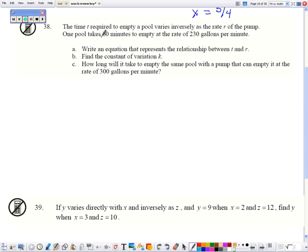So reading our word problem, the time varies inversely with the rate of the pump. It takes 60 minutes, that's the time. And 230 gallons per minute is a rate. So 60 equals k over 230. We're going to multiply by 230 to solve for k, and that equals 13,800.